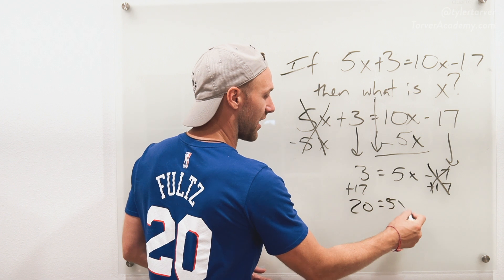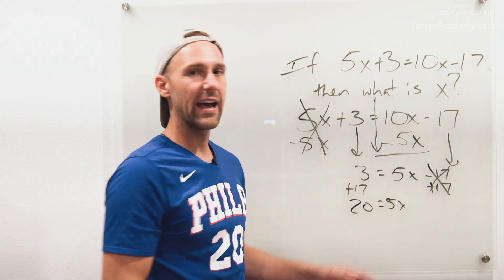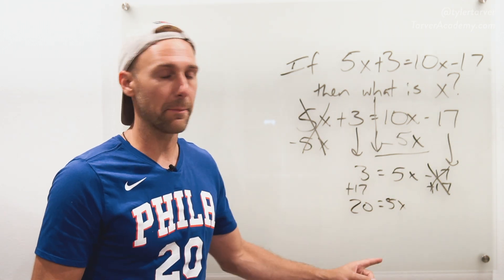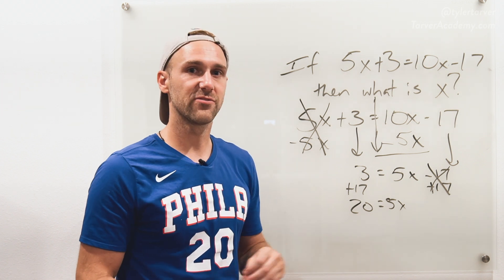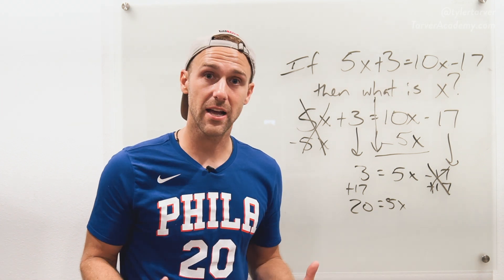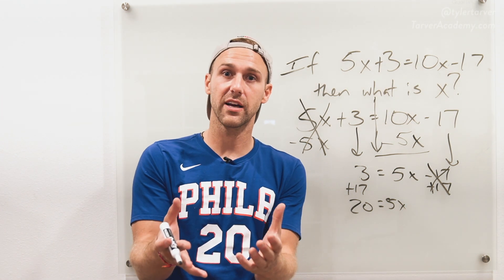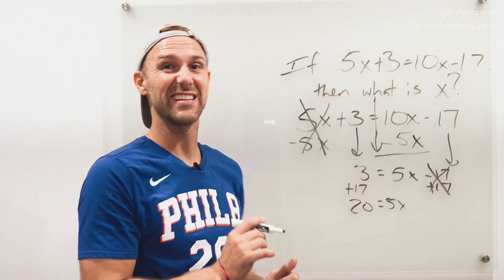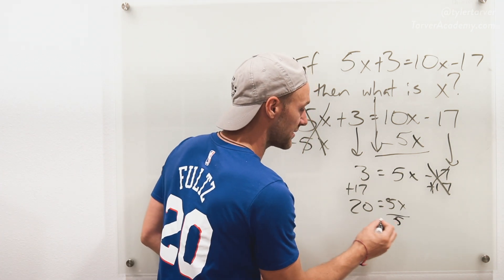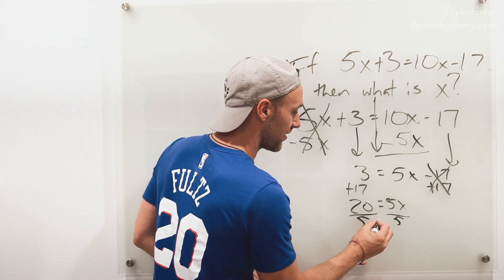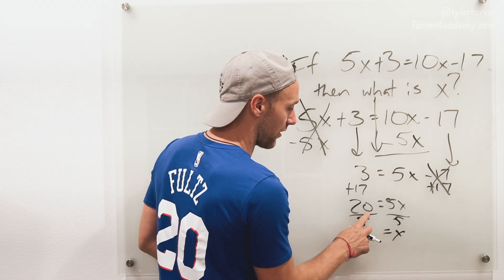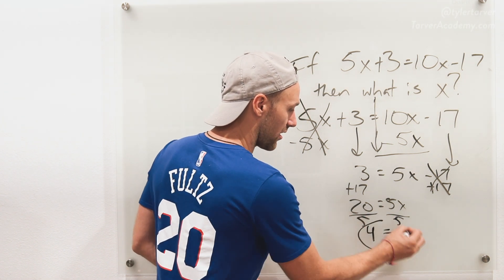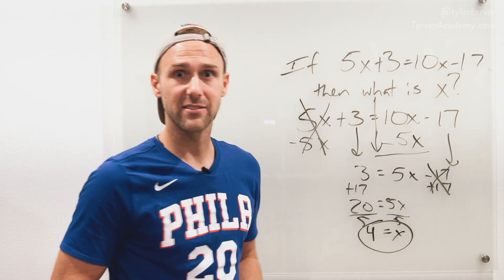Bring down my equal sign and my 5x. Last step — to get rid of that 5, I've got to do the opposite of what is happening. It's 5 times x, so the opposite of multiplying by 5 would be dividing. So I divide both sides by 5. x now equals 20 divided by 5, which is 4. And that is my answer.